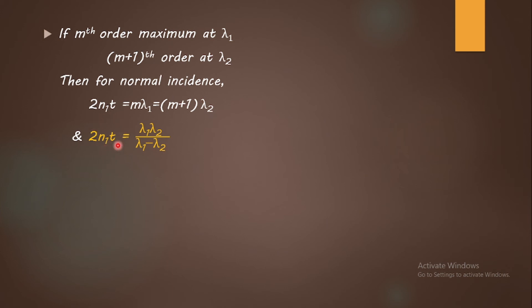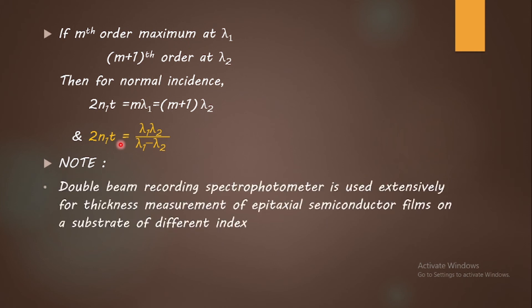Solving the equations gives: 2n₁t = (λ₁·λ₂) / (λ₁ − λ₂). This is the main equation used in the spectrophotometric method to find the thickness of the thin film. If n₁ (refractive index of the film) is known, then t can be easily determined, provided the refractive index does not vary rapidly with wavelength — which is important to ensure the validity of this equation.